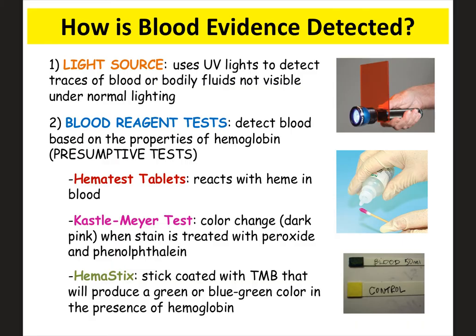One test I want to talk about is the Kastle-Meyer test, because this is probably the one you've seen on crime scene shows. Basically, you would swab a sample that you think might be blood, then treat that swab with a little bit of peroxide and phenolphthalein and see if you get a dark pink color change. If you look at the picture, you can see that swab turned bright pink, so the sample was definitely blood. It's called a presumptive test because based on this quick test, it appears to be blood.